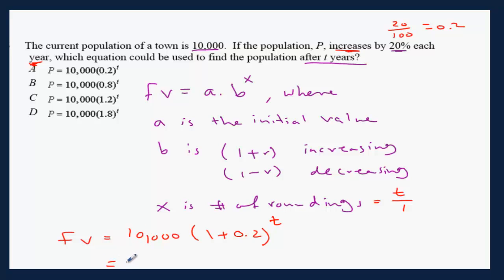Now, we get the future value equals 10,000 times 1.2 to the power of t. And that is choice C. Work well.